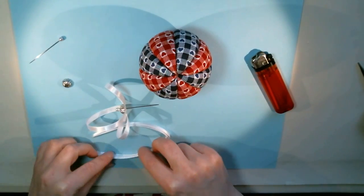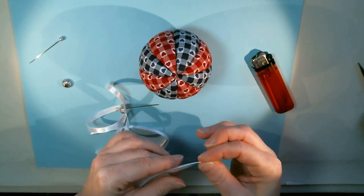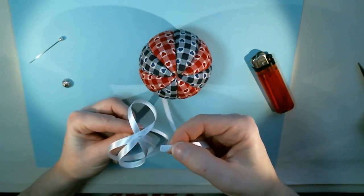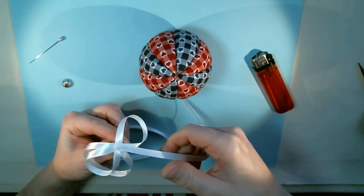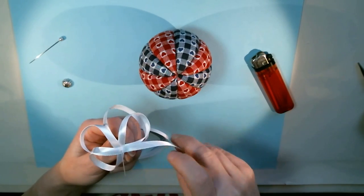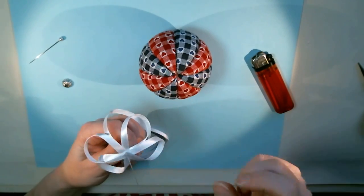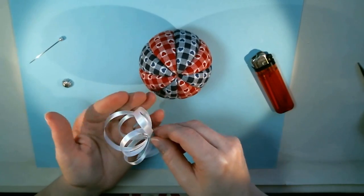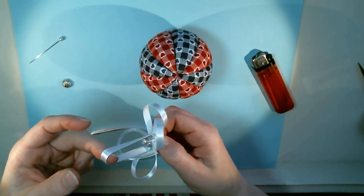Okay, so now you've got your first two loops on your bow there. And so next we're gonna do two more loops and you're gonna do the exact same thing as we did before. Pin the end, loop it around, pin the crease, loop it around in the opposite direction, and pin the end. There you go, now you got four loops.